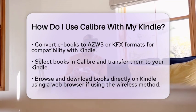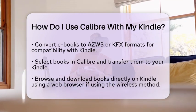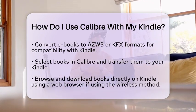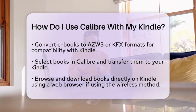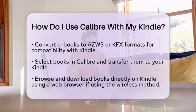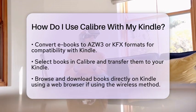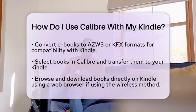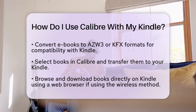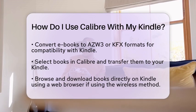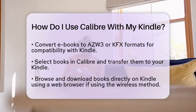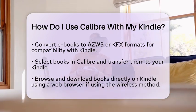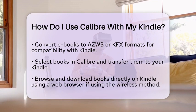Once your Kindle is connected, you can select the books you want to transfer. Just click the Send to Device button in Calibre. If you are using the wireless method, you can browse your library through a web browser on your Kindle or another device and download books directly.